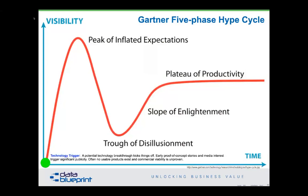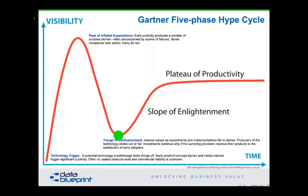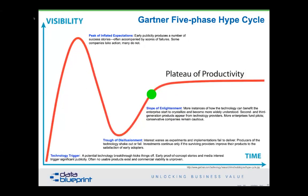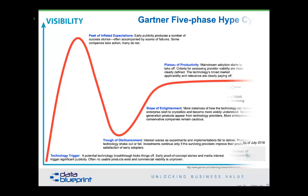Gartner encompassed this in their hype cycle. It says a technology trigger leads a brand new technology to something they call the peak of inflated expectations. Then almost inevitably the next phase is the trough of disillusionment. Only by going up the slope of enlightenment and reaching the plateau of productivity do we really understand how to gain benefit from the tool.